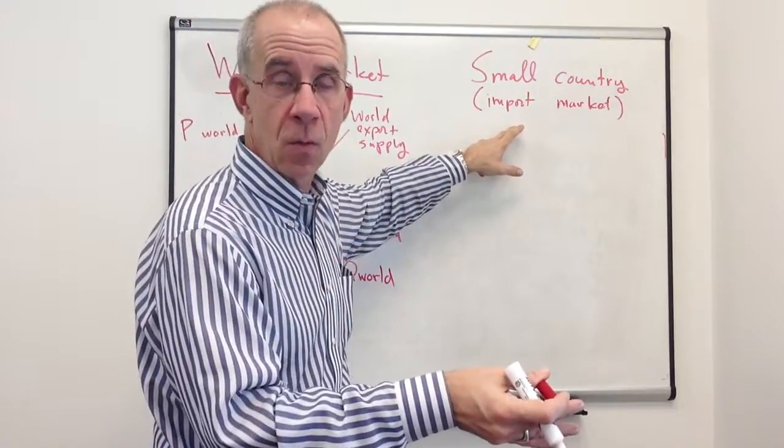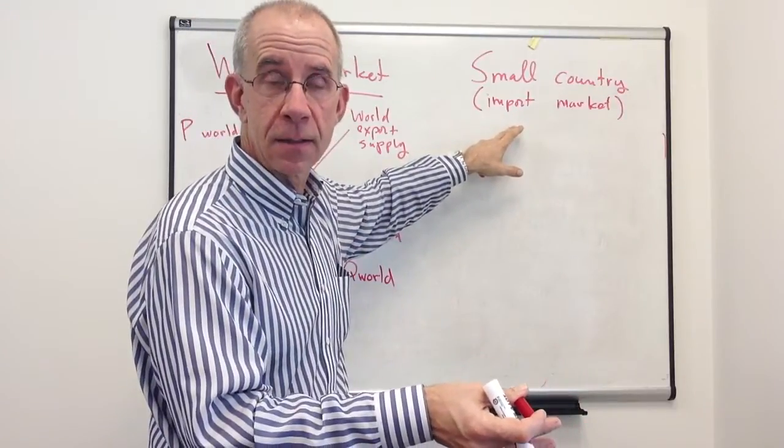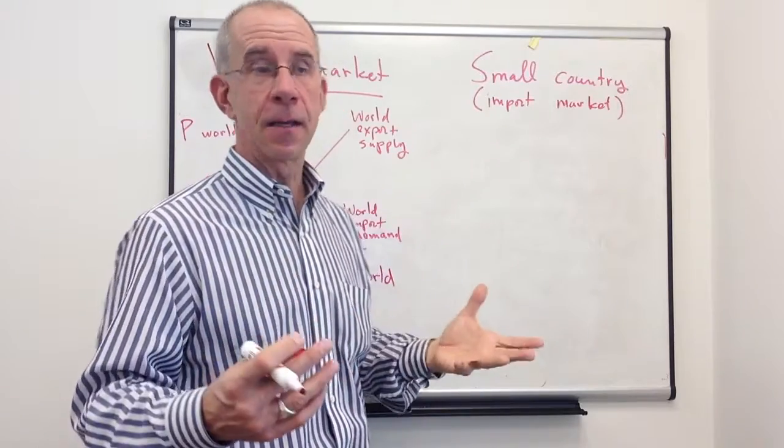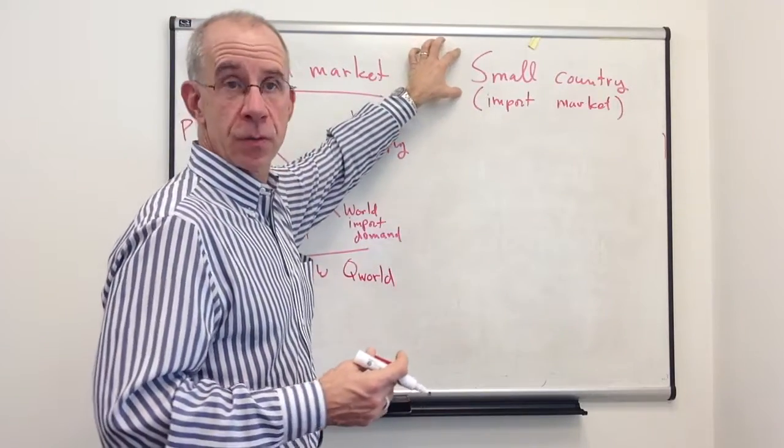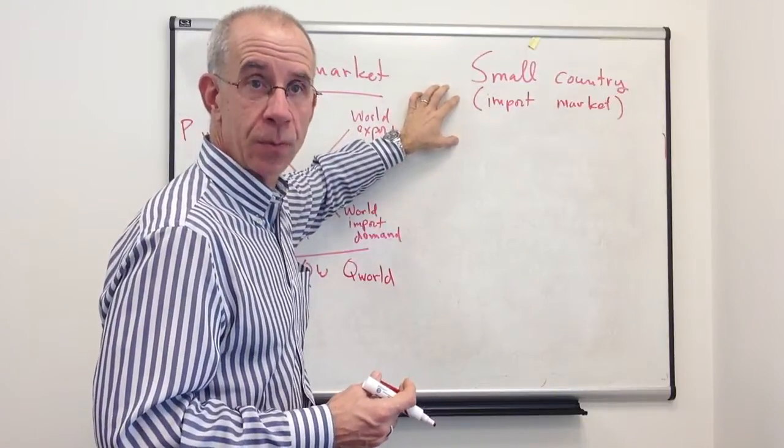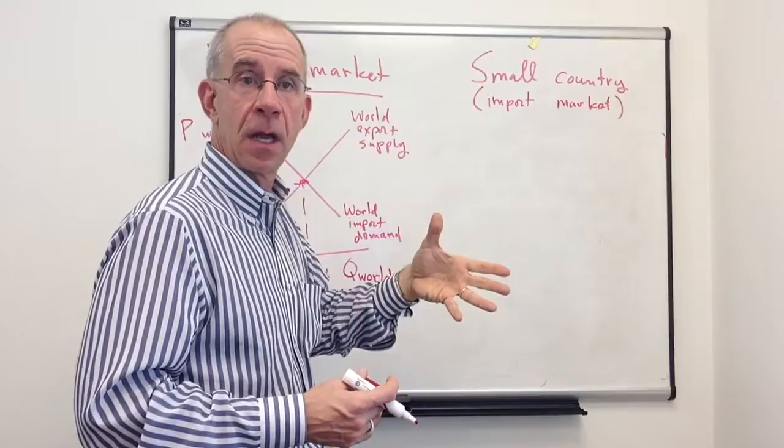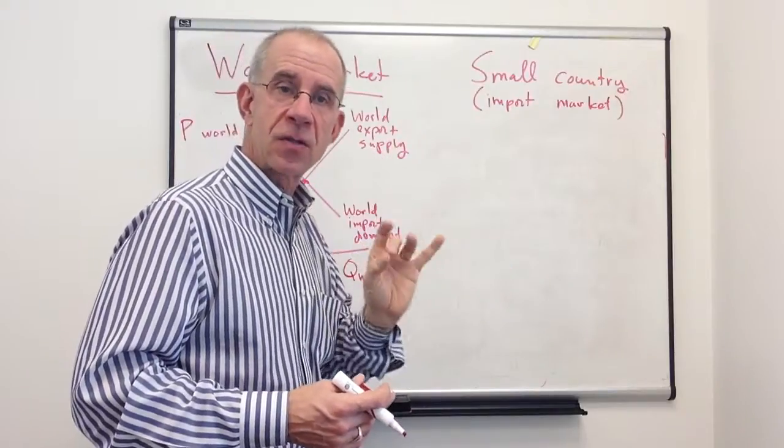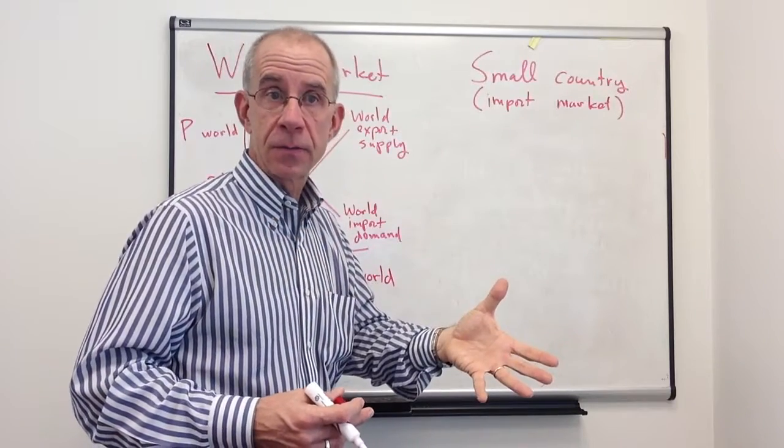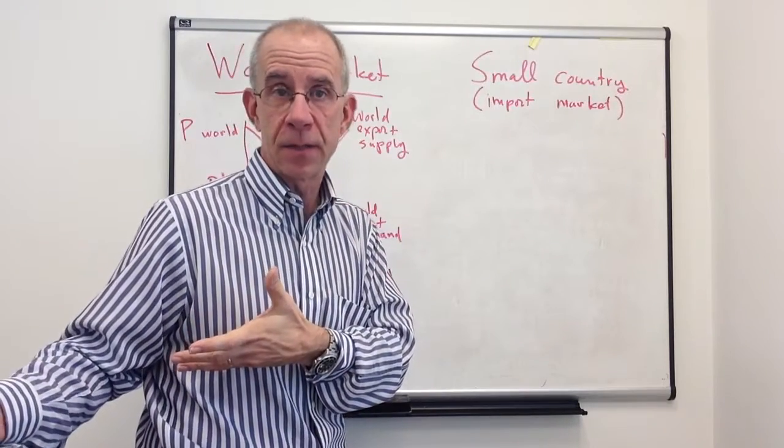Either changes in the quantity demanded inside the country, changes in government policy, changes in anything. For a small country in the import market, they take the world price as given. Because they represent such a small portion of the market, the world says, take this price or we're going to go sell someplace else.